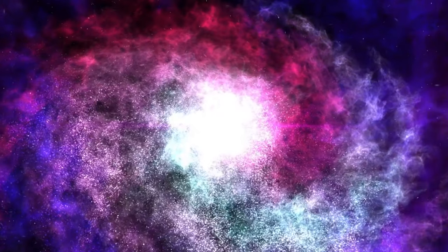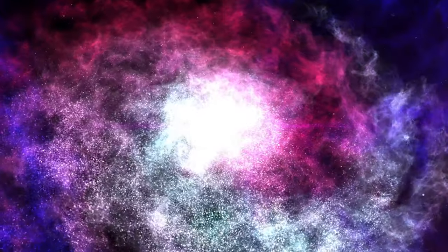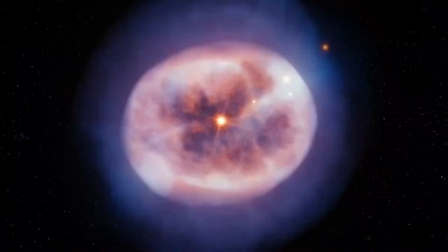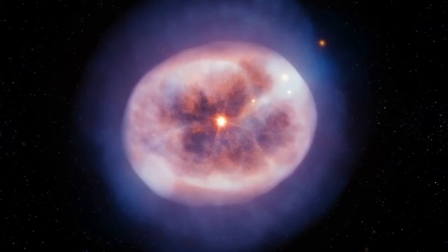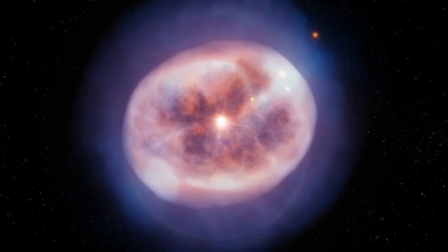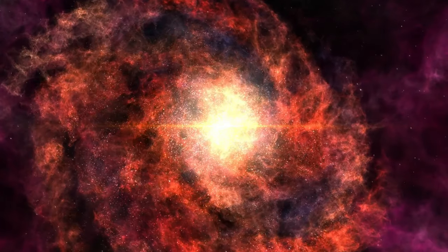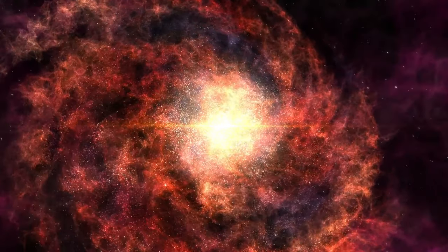In the constellation of Sculptor, we discover NGC 300, a spiral galaxy belonging to a group located approximately 6.1 million light years away from the Milky Way. Recent findings have expanded our understanding of NGC 300, revealing a large, rarefied outer disk of old stars, surpassing the size of any known before.